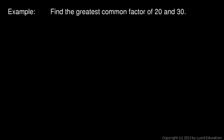So let's do this example, and I'll start off with some pretty simple numbers. Find the greatest common factor of 20 and 30. We start off by finding the prime factorization of the two numbers. I'll do 20 first, and I'll use continued division. 20 is 2 times 10, and 10 is 2 times 5.